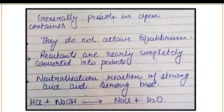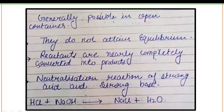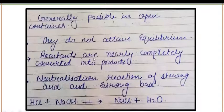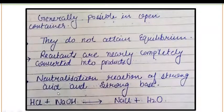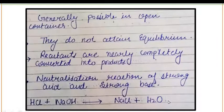Generally, irreversible reactions occur in open containers and do not attain any kind of equilibrium. Reactants are nearly completely converted into products. These kinds of irreversible reactions include the neutralization reaction of strong acid and strong base. For example, HCl + NaOH leads to the formation of NaCl + H₂O.